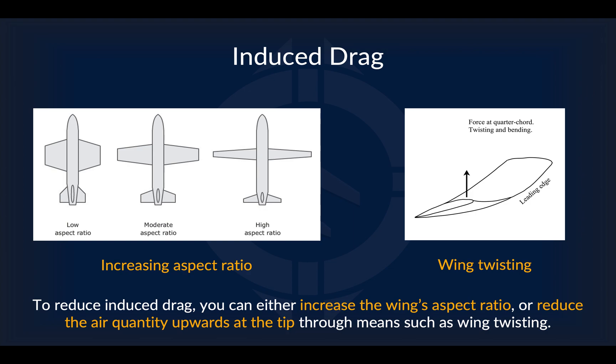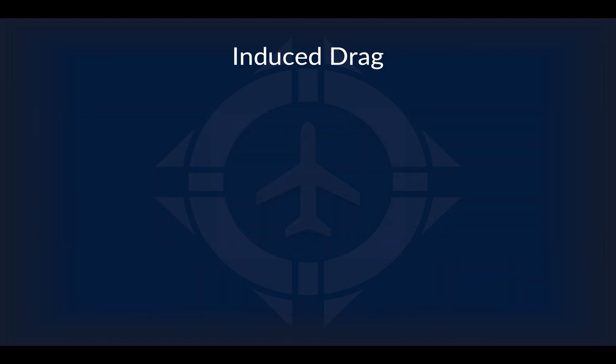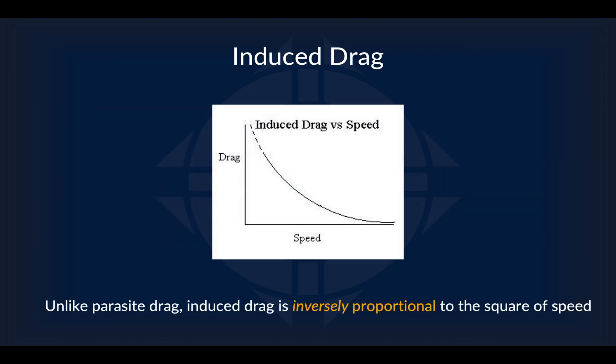There are two main ways to reduce induced drag: one is to increase the wing's aspect ratio, and the other is to reduce the air quantity produced upwards at the tip through means such as wing twisting. A special property of induced drag is that, unlike parasite drag, it is inversely proportional to the square of speed — as you increase in speed, induced drag decreases.